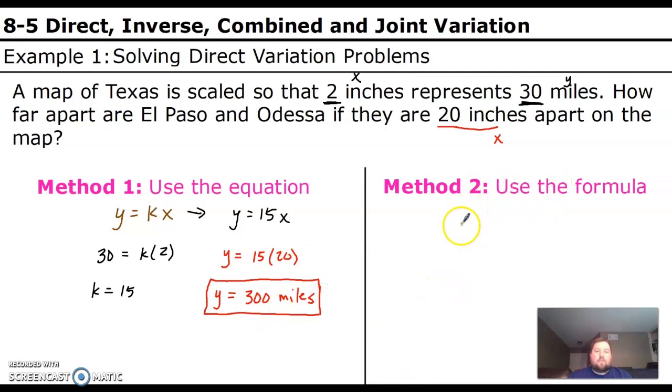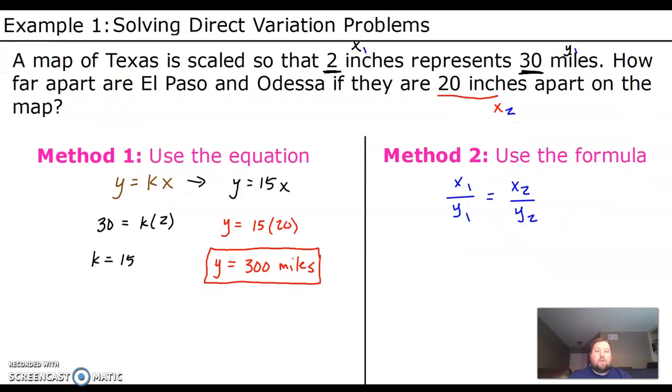The other way is to use the formula. So here's the formula for direct variation. It's a proportion. x1 over y1 is equal to x2 over y2. And they will have had to have given you three of these pieces of information, and it's your job to find the fourth piece. So if we go up here to use the formula, then 2 would be our x1, and 30 would be our y1, and 20 would be our x2. And we're trying to find y2. So let's plug all this in. 2 over 30 equals 20 over y2. And to solve a proportion, you need to cross-multiply. So 20 times 30 is 600. 2 times y2 is 2y2. And we just divide by 2 on both sides, and we end up with our answer of 300.